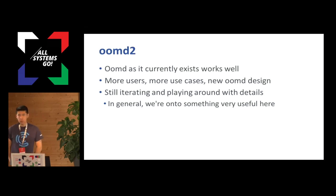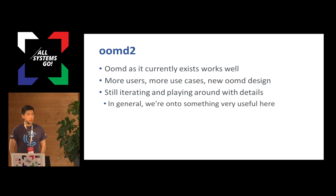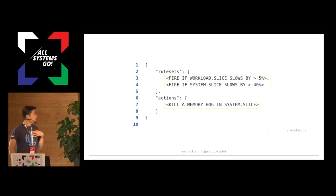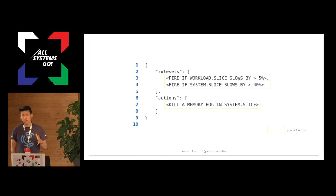OomD as it currently exists works pretty well. We have it in production in a bunch of places and it helps prevent a lot of really bad pathological cases when a host runs out of memory. However, as we've onboarded more customers and experienced different use cases, it's become apparent that we need to iterate on OomD. So we're changing the config file language and how things work in the back end. What I have here is the OomD2 config — the next iteration. It's mostly pseudocode in the yellow box. What this is essentially saying is: if the workload slows down by more than 5%, or if system.slice slows down by more than 40%, please kill something that hogs a lot of memory in system.slice. In other words, if your workload experiences a little bit of slowdown, please do something about it; if the non-essential stuff experiences a good amount of slowdown, it doesn't really matter as long as the workload is healthy.